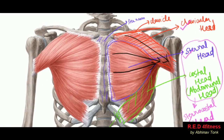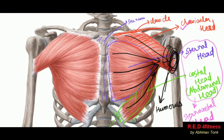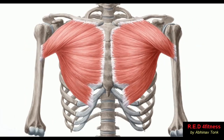All the chest fibers from all the heads converge to one point. That point is the humerus — the limb bone. So all chest heads, whether originating from the clavicle, the sternum, or the costal cartilages, all converge to the humerus. Now let's talk about the classification of the chest muscle based on the fitness and bodybuilding world.